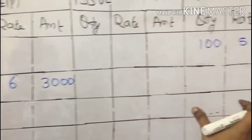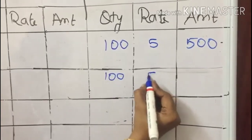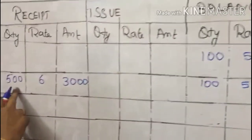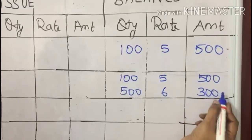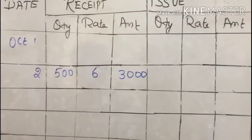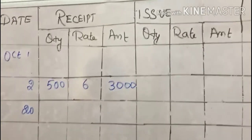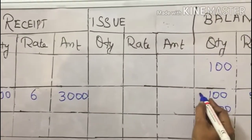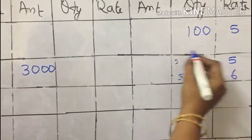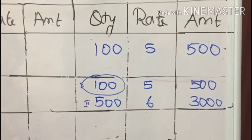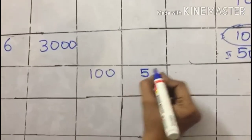That receipt has to be carried forward in the balance column. Already the opening balance of 100 is there, so you write it again: 100 at the rate of 5. Then record the new receipt: 500 at the rate of 6 and 3000. On the next date, October 20, there is an issue — totally 300 units. There are two bags. I have to issue from the first bag first, using the first in, first out method. So I issue 100 units at the rate of 5, giving 500.